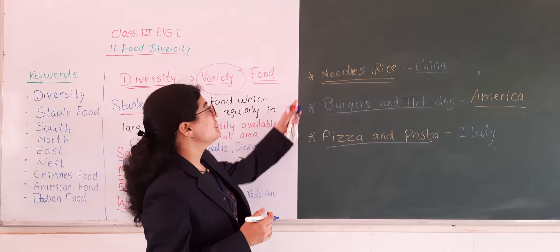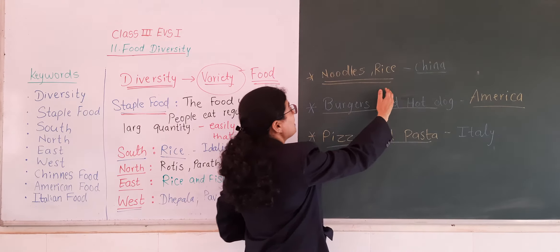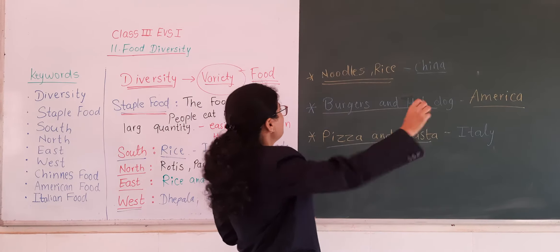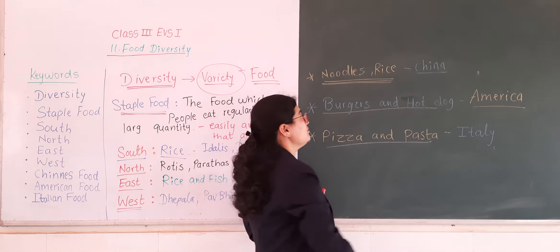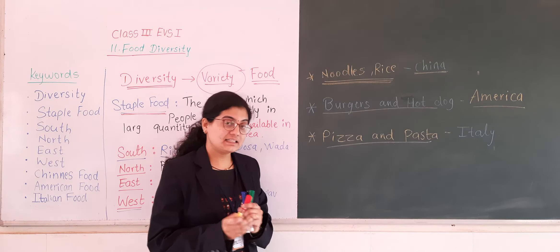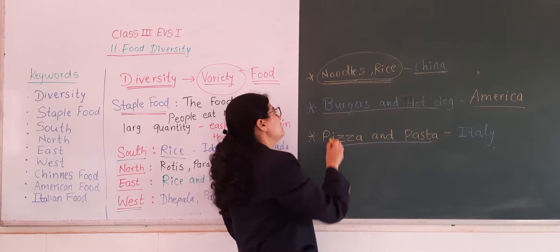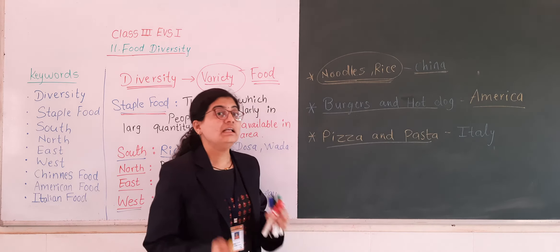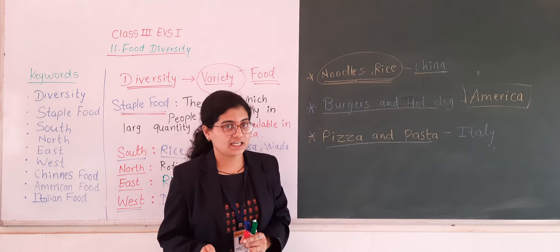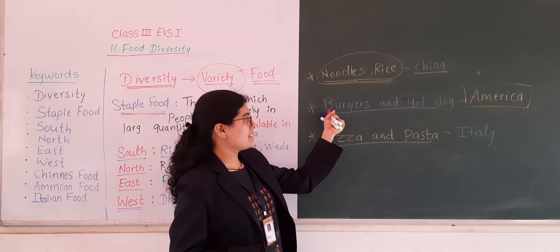Now we are going to learn about different countries. Have you heard about noodles and rice? Noodles and rice are eaten by people in China — these are Chinese food items. Then, burgers and hot dogs are American food items. In America, people eat burgers and hot dogs, so these are the staple food items of America.